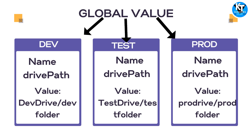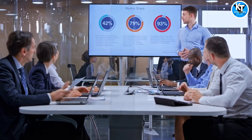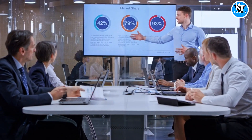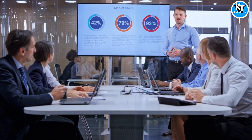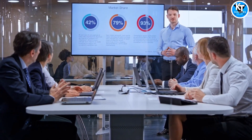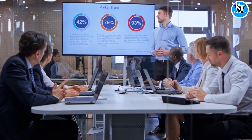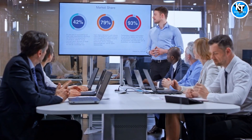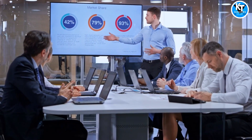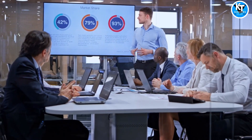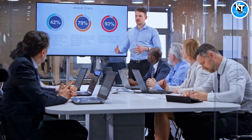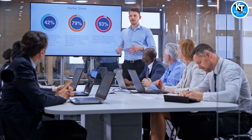A user with the AAE admin role or view-and-manage global value permission can configure a global value using a tenant scope value. This enables other Automation A360 users to either use tenant scope or override to user scope values in their bots. The data types of a global value can be DateTime, Number, String, Boolean, and User Group.